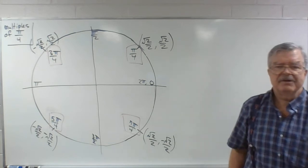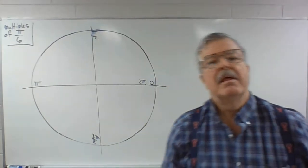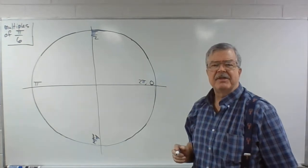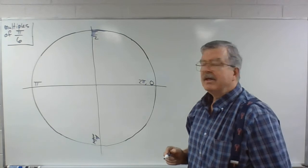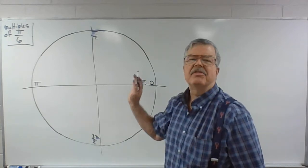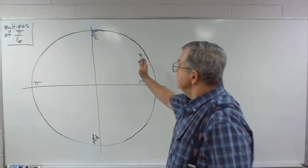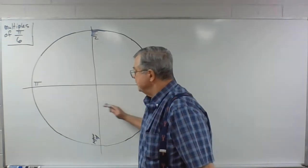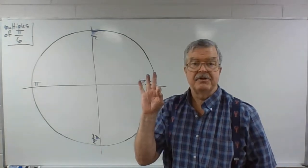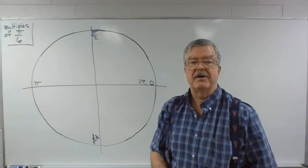Now let's look at pi over 6. Pi over 6 is the same thing as 30 degrees, so an angle of pi over 6 is one-third of a right angle. Each of these quadrants is divided into three angles of measure 30 degrees, or three angles of measure pi over 6.